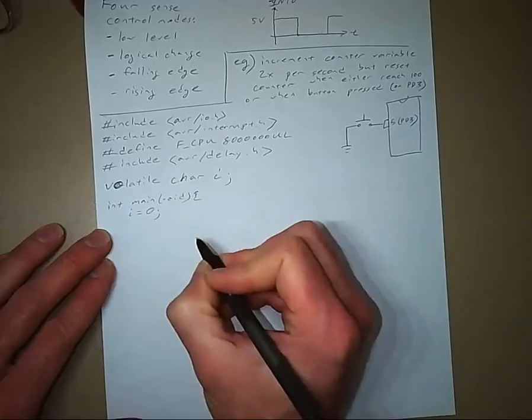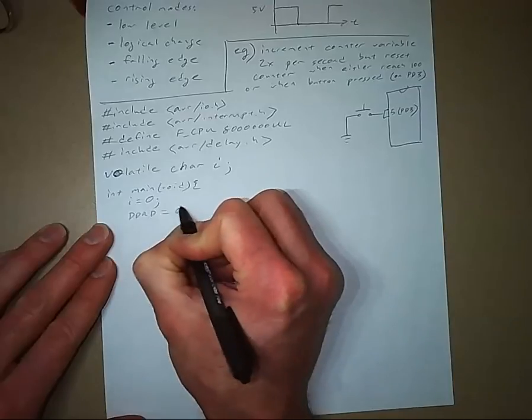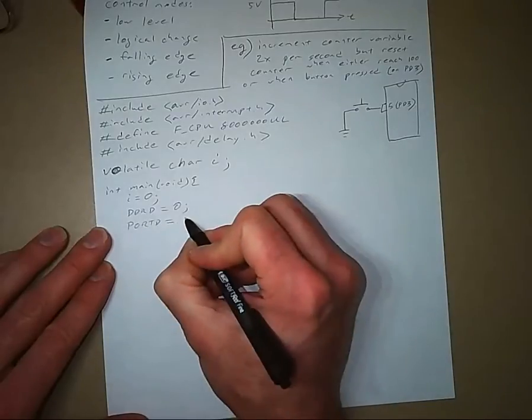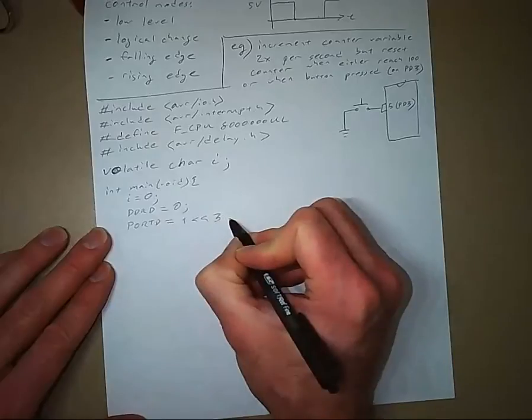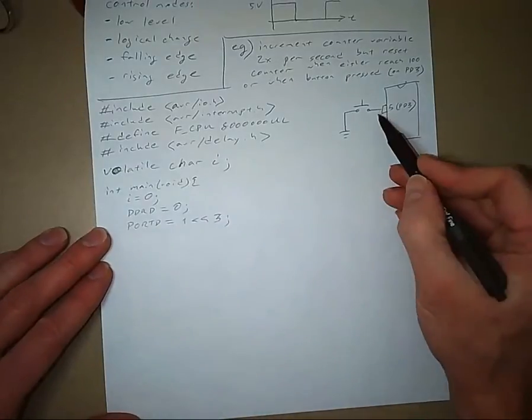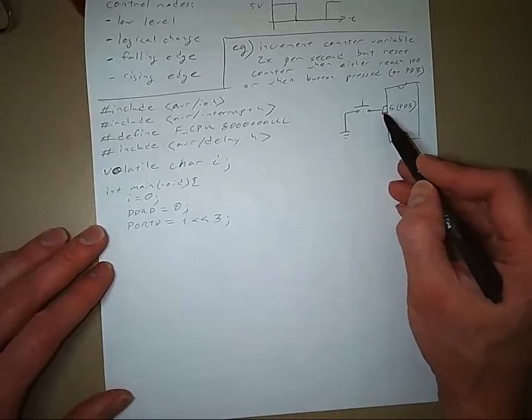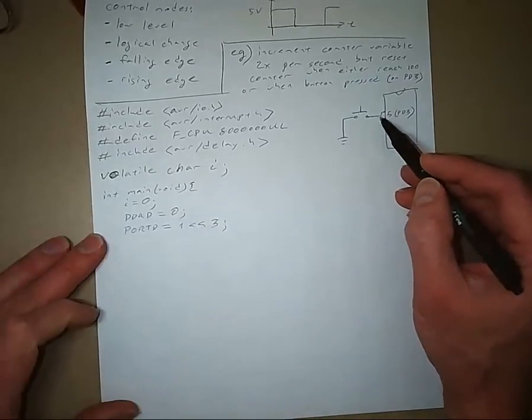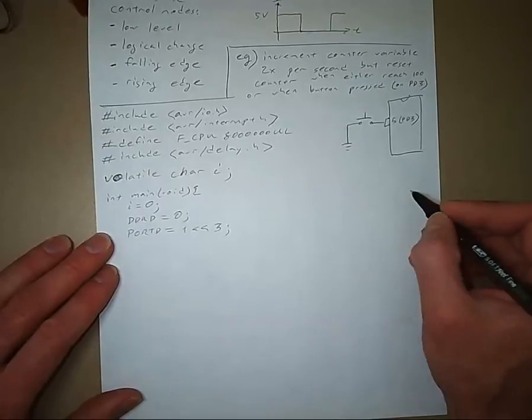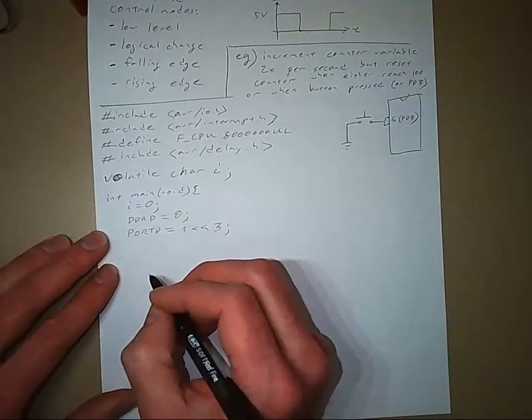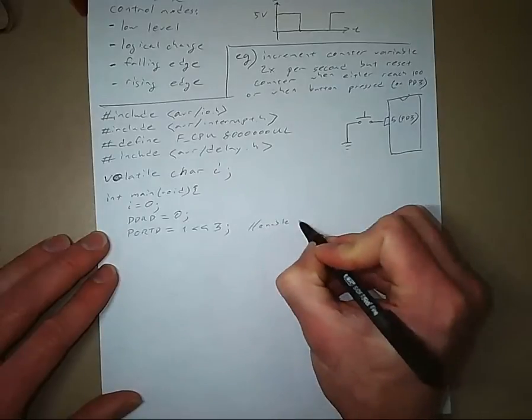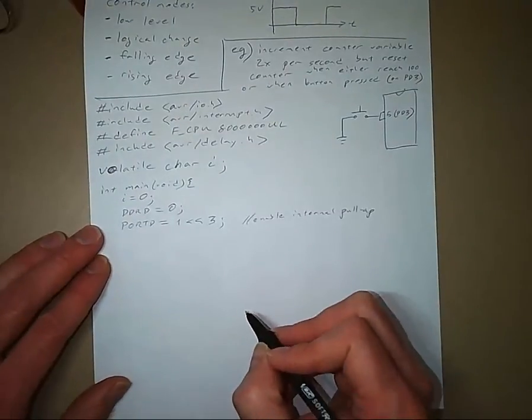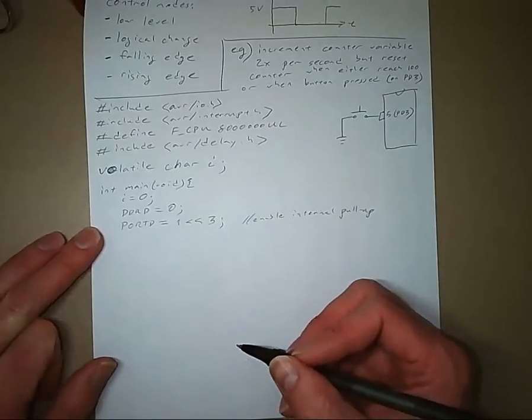Assign value zero to i. Make port D inputs. Enable the internal pull-up resistor on port D pin three. Because without the internal pull-up resistor, whenever the button's not pressed, this would be at an unknown voltage. So the internal pull-up resistor will keep this pin at high voltage whenever the button's not pressed. And so enable internal pull-up.